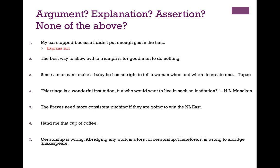Number two: 'The best way to allow evil to triumph is for good men to do nothing.' This is an assertion. It's a complete thought — a claim that could be true or false. You might think it's an explanation, but it's not explaining something that took place; it's making a statement. And it gives you no reason to think it's true. Remember, an assertion is a kind of claim, and claims are things that can be true or false — so assertions are also the kinds of things that could be true or false.